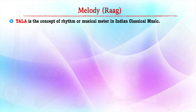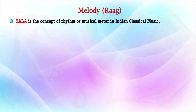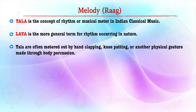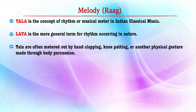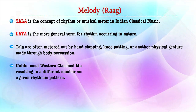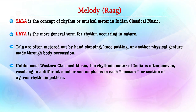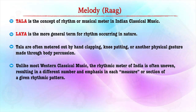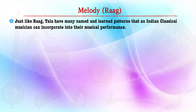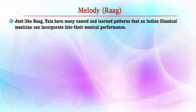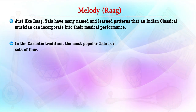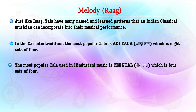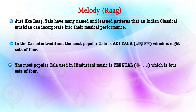So learners, we have understood that rag, along with tal, is another important concept of music in India. Lei is a more general term for rhythm occurring in nature. Tals are often metered out by hand clapping, knee patting and other physical gestures. The rhythm meter of India is often uneven compared to Western classical music. Tals also have their own names and patterns which classical Indian musicians incorporate into their performances. In the Karnataka tradition, the most popular tal is Adi tal, which is 8 beats in sets of 4. The most popular tal in Hindustani music is Tin tal, which is 4 sets of 4.